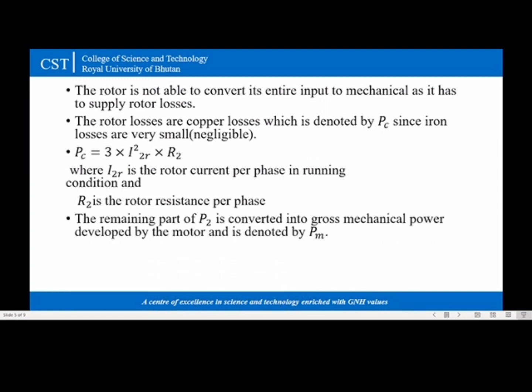After supplying these losses, the remaining part of P2 is converted into mechanical which is called gross mechanical power developed by the motor denoted as PM. Therefore PM is equal to P2 minus Pc.